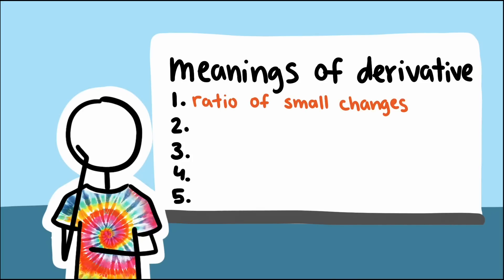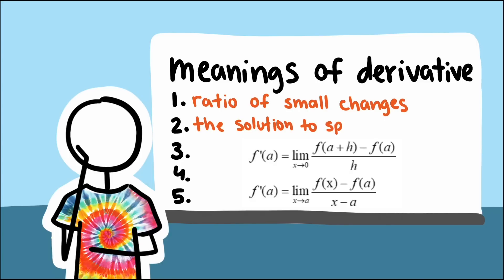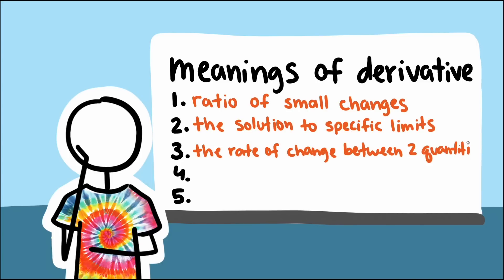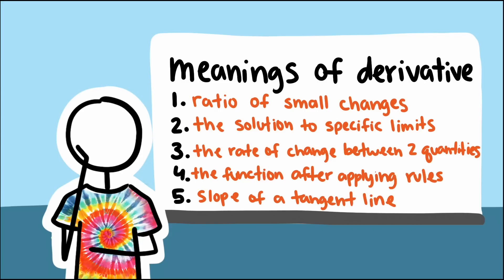1. A ratio of small changes. 2. The solution to one of these limits. 3. The rate of change of one quality with respect to another. 4. The new function after applying derivative rules. 5. The slope of a tangent line.